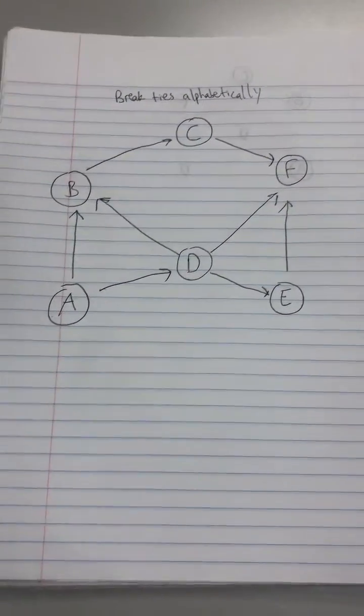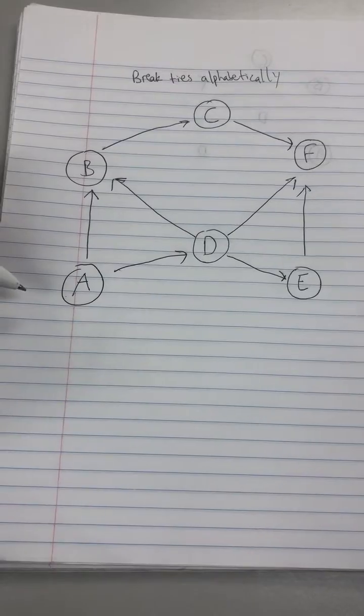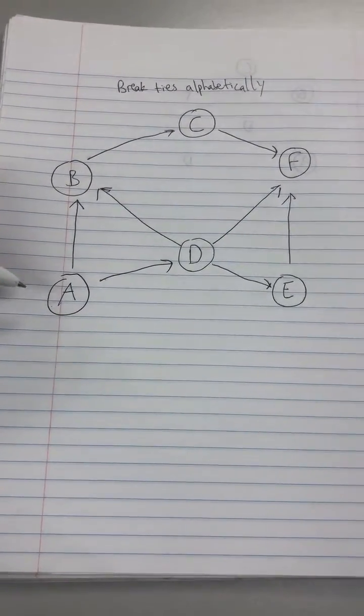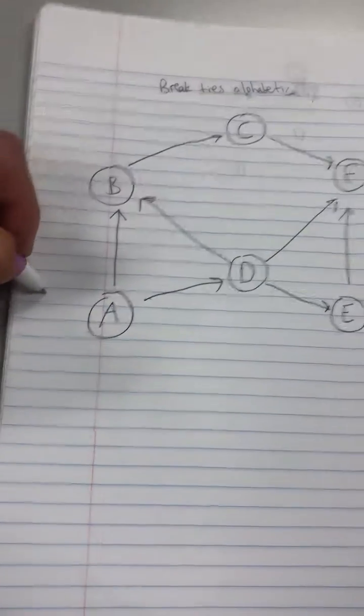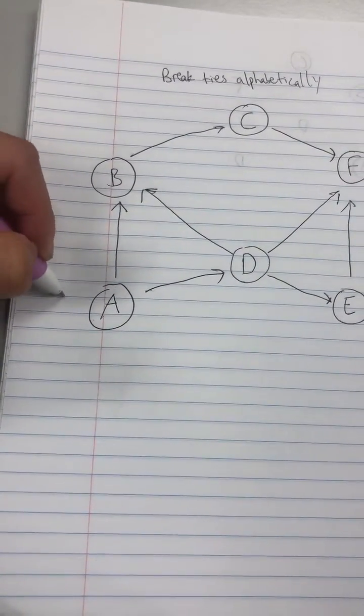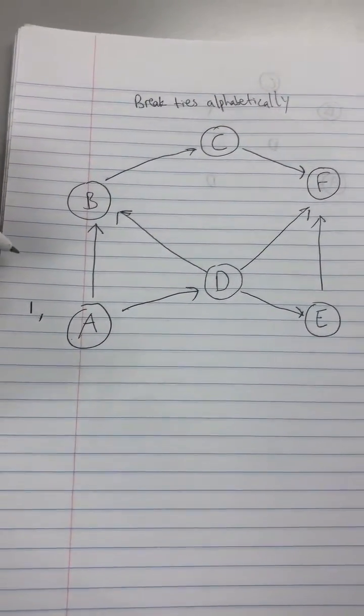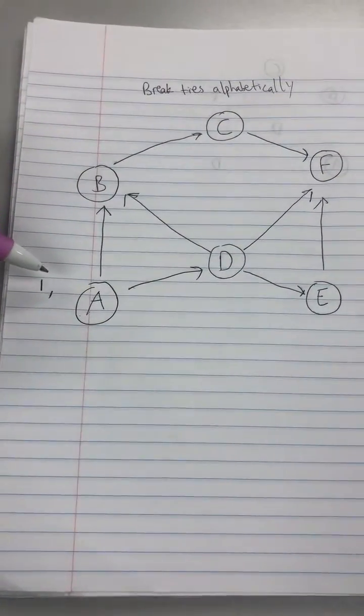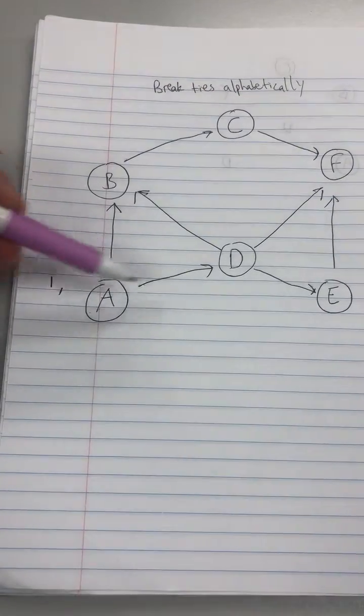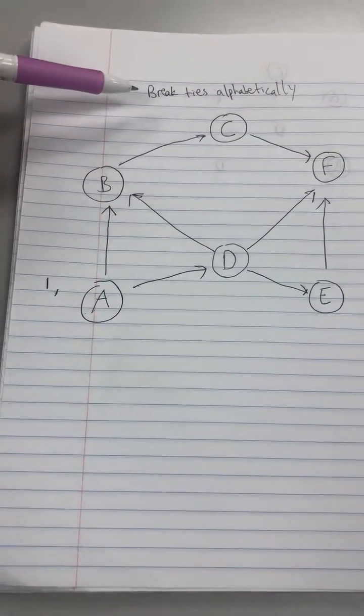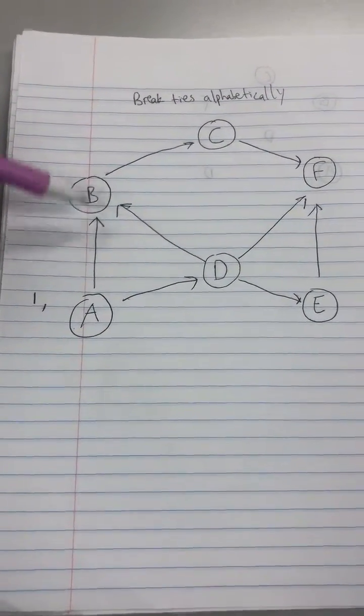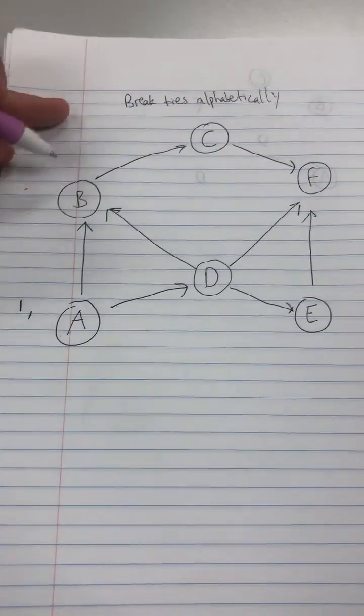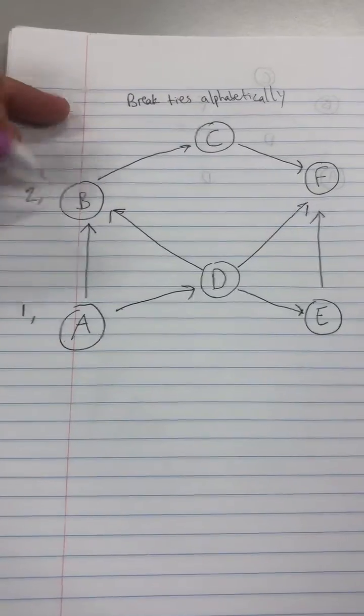Essentially we're going to keep track of an ordered pair for each node. Starting at A, we're going to put one, comma. From here we're going to look at the children of A, which are B and D. Since they're the same distance apart, we're going to break ties alphabetically, so we go to B. When we go to B we'll put two comma.